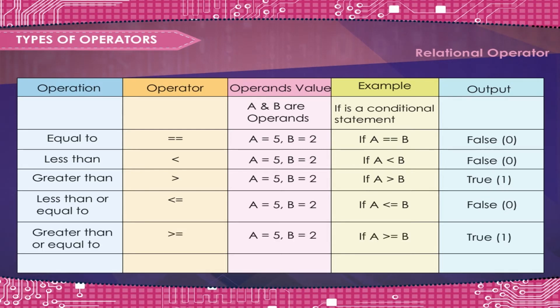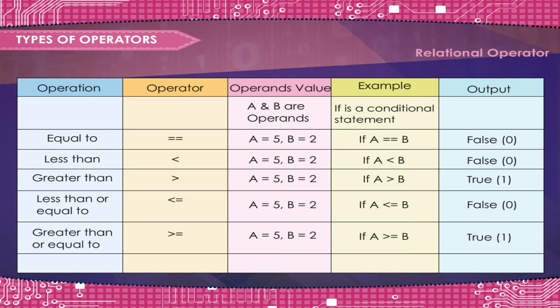Greater than or equal to: A is equal to 5, B is equal to 2. If A is greater than or equal to B — True, 1.